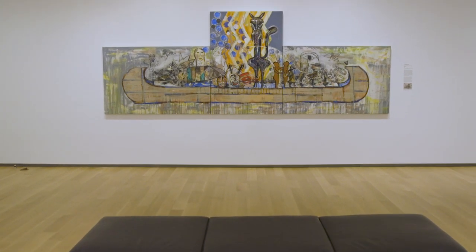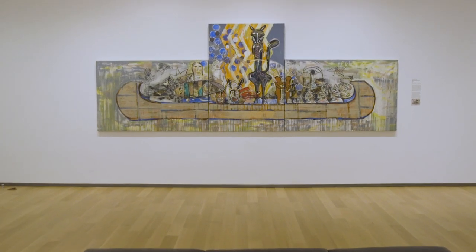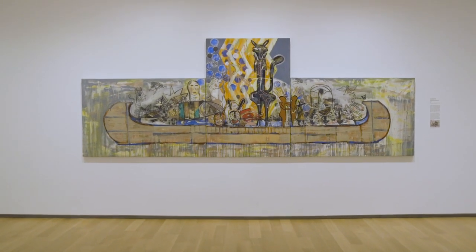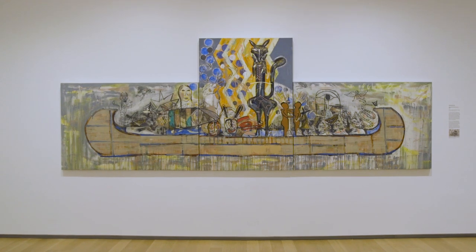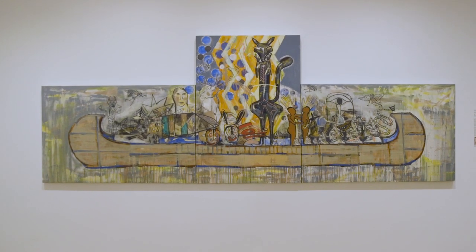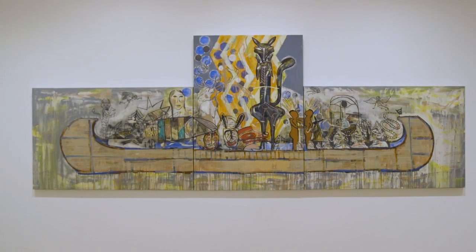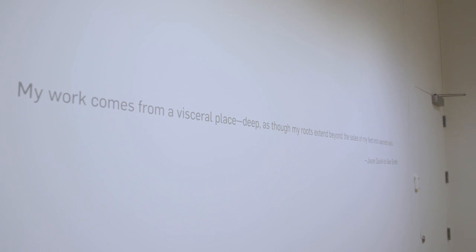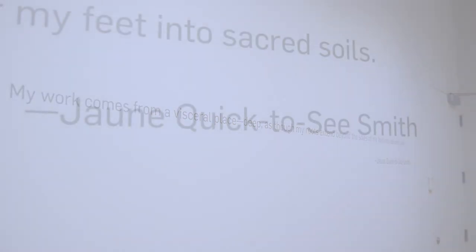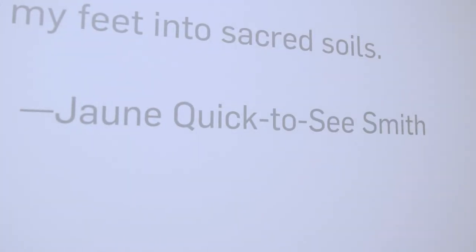This piece is called Trade Canoe: Forty Days and Forty Nights, and it was created in 2015 by Jaune Quick-to-See Smith. A self-described cultural arts worker and activist, Jaune Quick-to-See Smith is an enrolled citizen of the Confederated Salish and Kootenai Tribes.